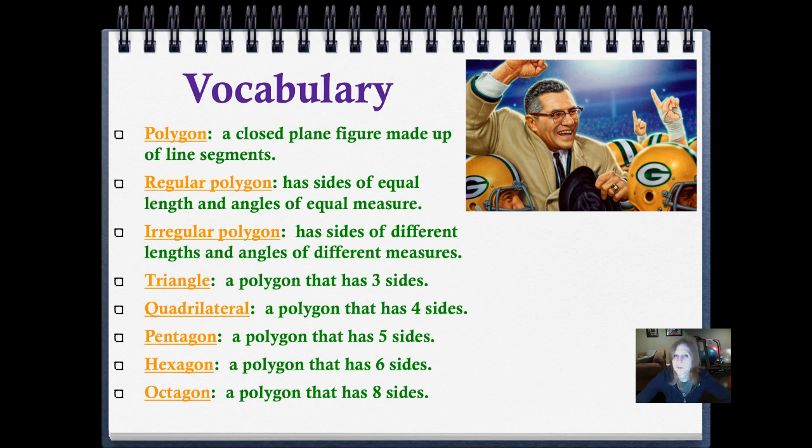A hexagon has the word, the letter X in it. And that reminds me that a hexagon has six sides. So if you think hex, H-E-X, and then six, S-I-X, the X is the third letter in both. So that would mean that a hexagon has six sides.